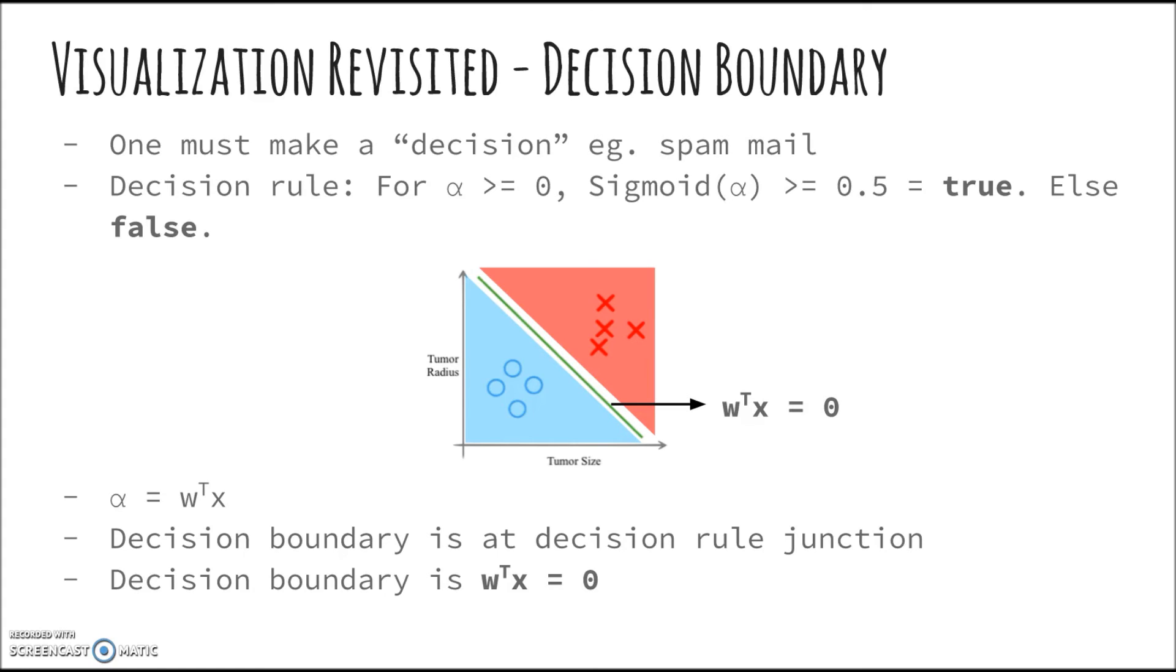Now, we need to figure out how to convert the probabilities that we get from our model into a discrete class. To do this, we must create a decision rule. Earlier, we discussed that if a probability is 0.5 or greater than 0.5, it means that by rounding it up, it corresponds to a discrete class of 1 or true. If it is smaller than 0.5, it belongs to the class of 0 or false.